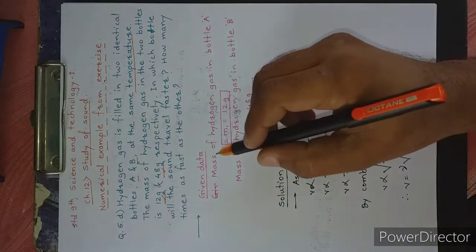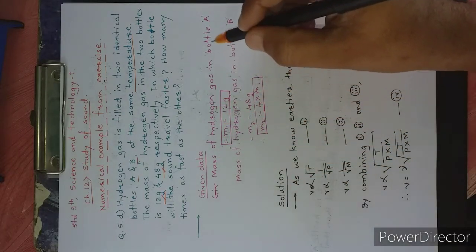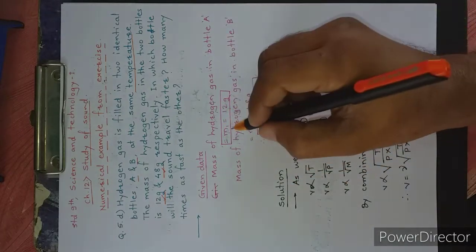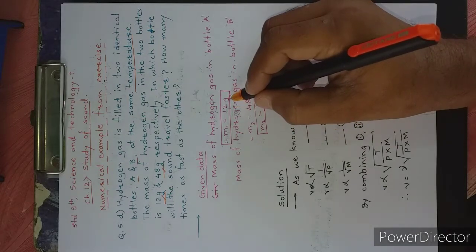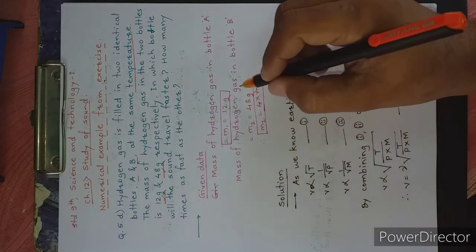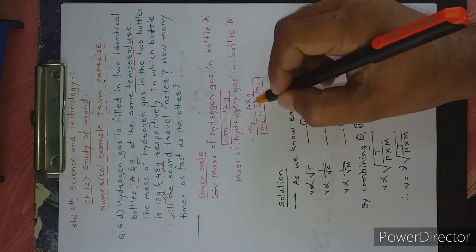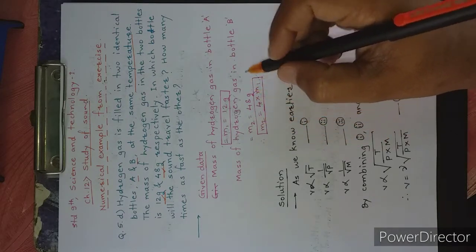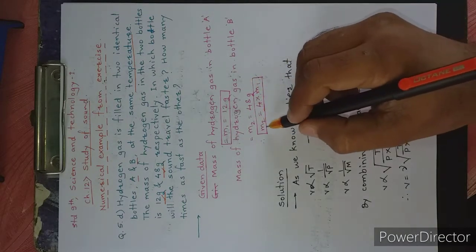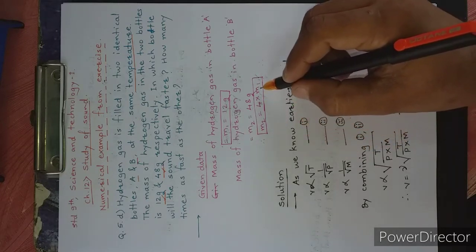Now, the given data is: mass of hydrogen gas in bottle A, that is M1, is equal to 12 grams. Mass of hydrogen gas in bottle B, that is M2, is 48 grams. Therefore, we can conclude that M2 is equal to 4 times M1.